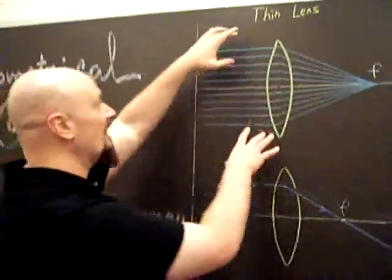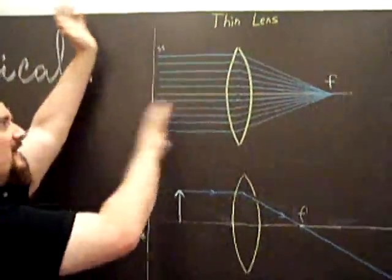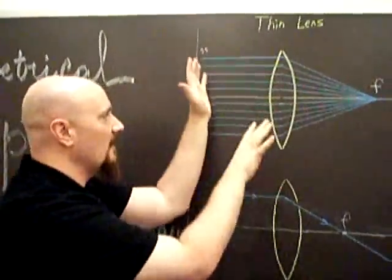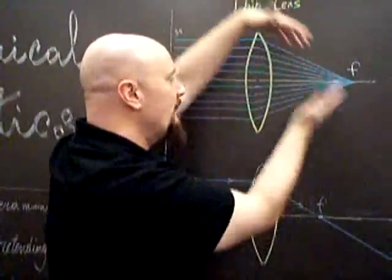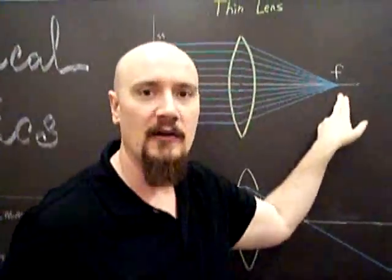A thin lens is what we're going to be using today. And one of its properties is if light is going into the thin lens on one side and it's parallel, it will bend. It will deviate in such a way that it'll all pass through a point on the other side called the focus.